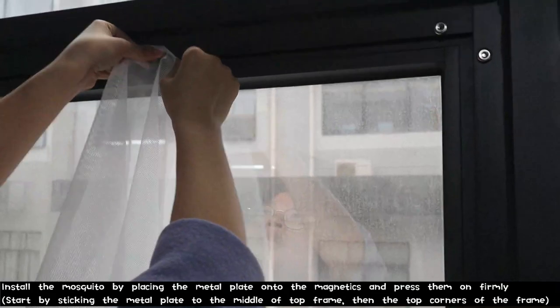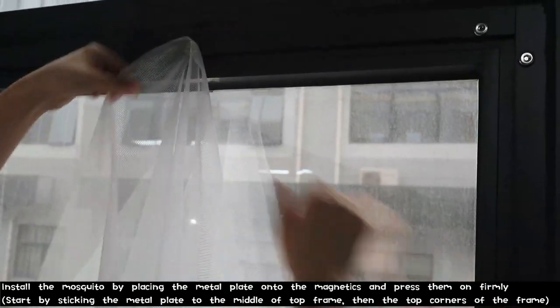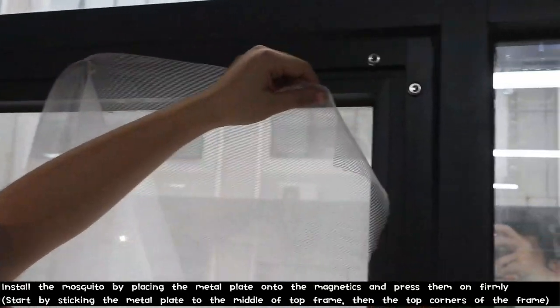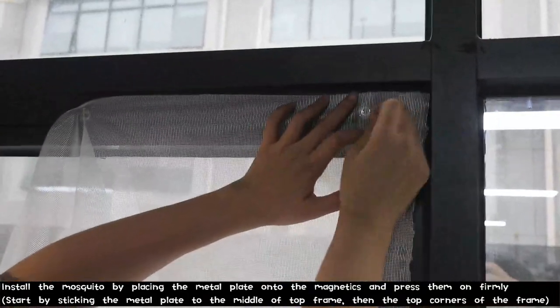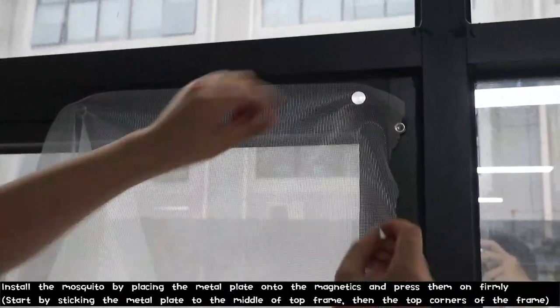Install the mosquito net by placing the metal plate onto the magnetics and press them on firmly. Start by sticking the metal plate to the middle of the top frame, then the top corners of the frame.